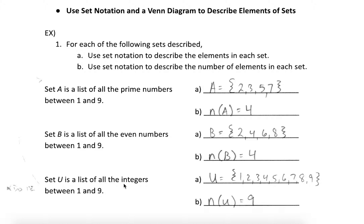And that's going to be all of the integers between 1 and 9. So integers are just whole numbers — they could be positive or negative, but we'll just focus on the positive ones between 1 and 9 in this group. So we create a list of those integers: 1, 2, 3, 4, 5, 6, 7, 8, and 9.